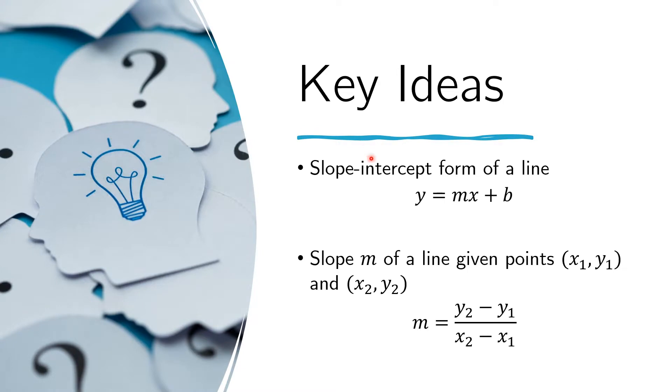Let us recall the slope-intercept form of a line. Any line on the xy-plane can be written using this form. This is the equation of any line on the xy-plane. Here, m is the slope of the line and b is the y-intercept of the line.